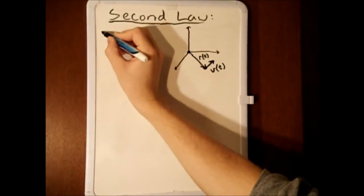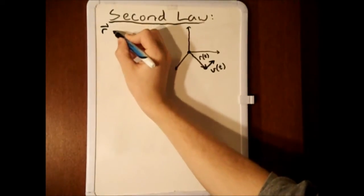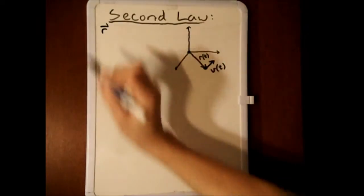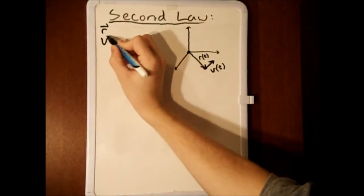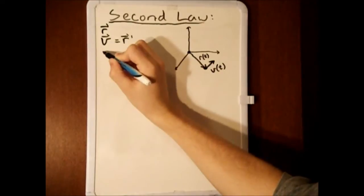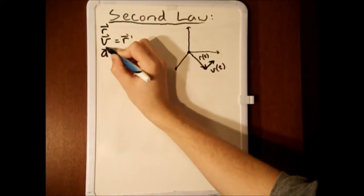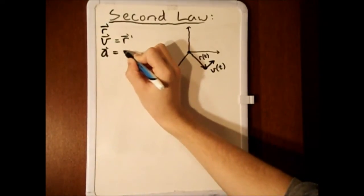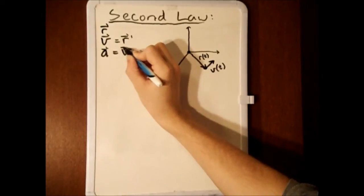Let us note the position of the planet with the vector r. The planet's velocity v is the first derivative of the r vector, and its acceleration vector is the second derivative of the position and the first derivative of the velocity.